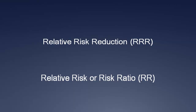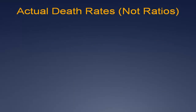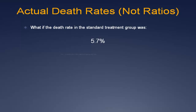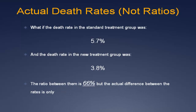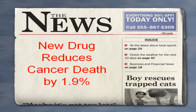Sounds good — what's missing? If the actual death rate for those on standard treatment was only 5.7%, and the death rate in the new treatment group was only 3.8%, then the death rate using standard care for this cancer is not very high to begin with. The ratio between treatment groups magnified the effect to 66%, which is a true ratio, when the actual difference between the rates is only 1.9% — that's 5.7 minus 3.8. Because I said cancer, the assumption was that the death rate was 100%, so a one-third reduction seemed impressive, but we didn't know the actual rates or that the standard treatment seems quite effective. Now let's read the headline: 'New drug reduces cancer death by 1.9%.' Not quite a headline anymore.